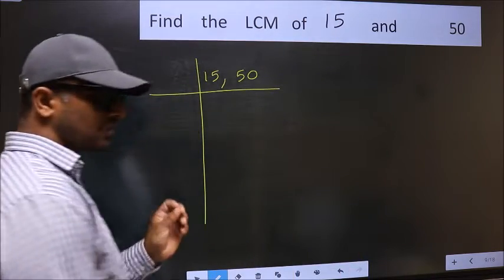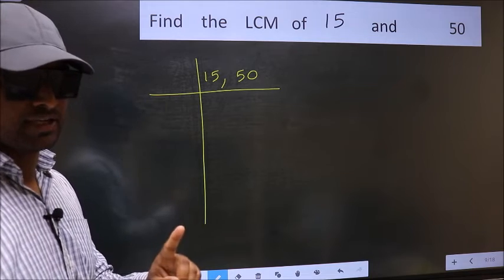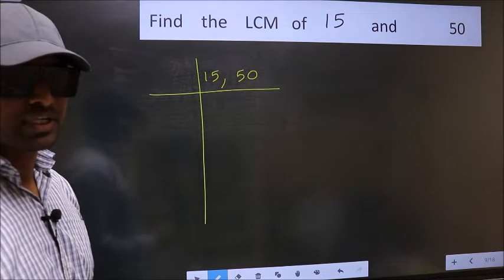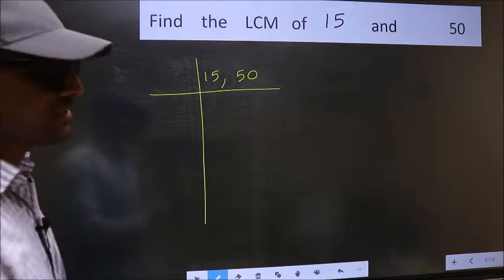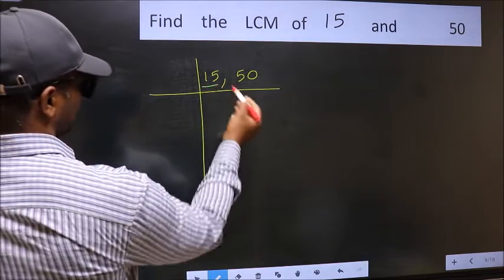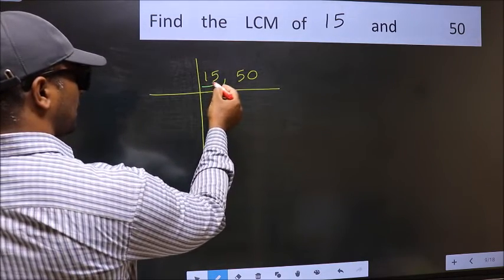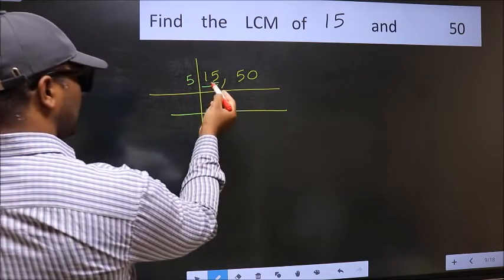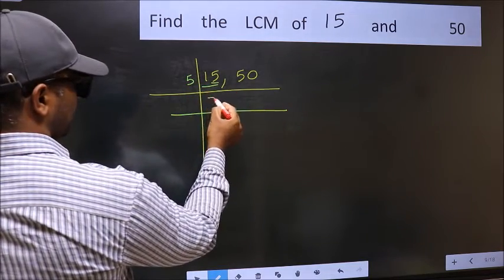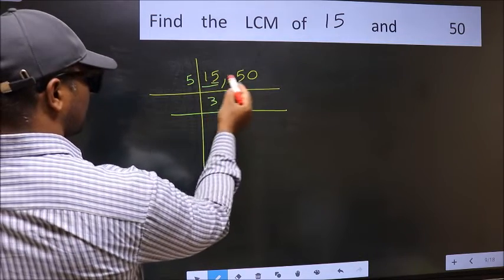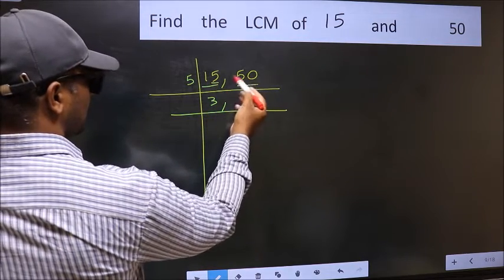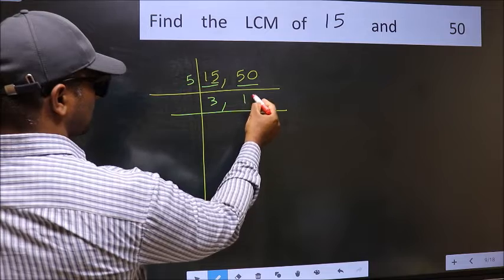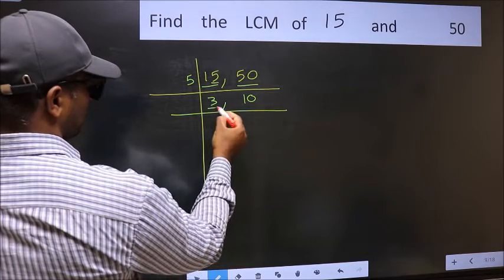This is your step 1. Now you should focus on the first number, which is 15. In this number, the last digit is 5, so take 5. When do we get 15 in the five table? Five times 3 is 15. The other number, 50, when do we get it in the five table? Five times 10 is 50. Now here we have 3 and 10.